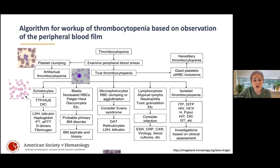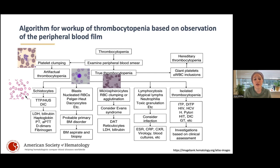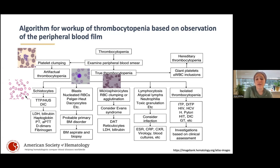If you see microspherocytes and RBCs clumping together, that can be what we call Evans syndrome — autoimmune hemolytic anemia and thrombocytopenia. There's an autoimmune process, but it's not the ITP process; it's from a hemolytic anemia perspective and has a different workup.